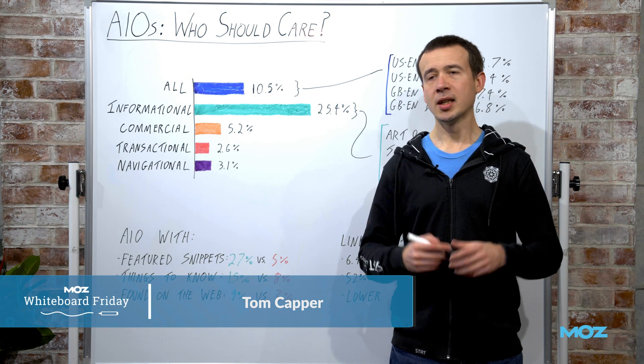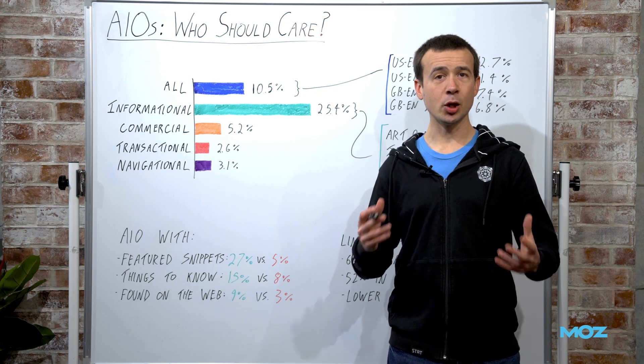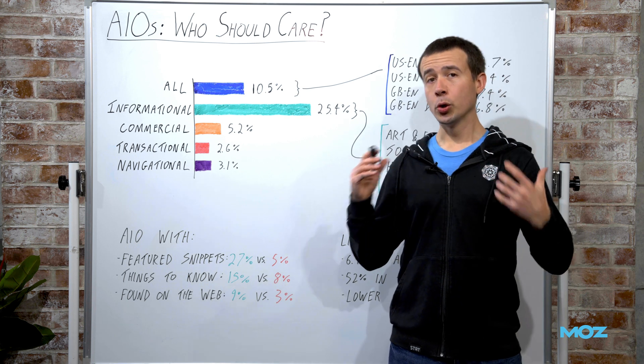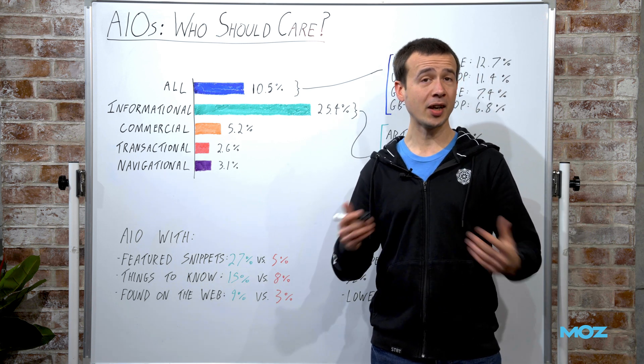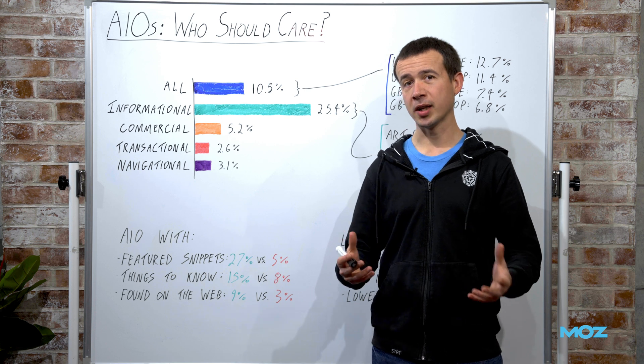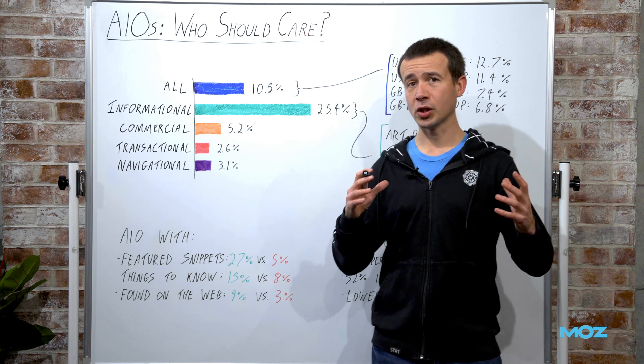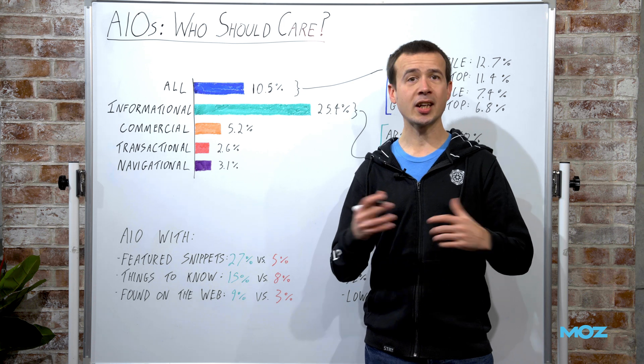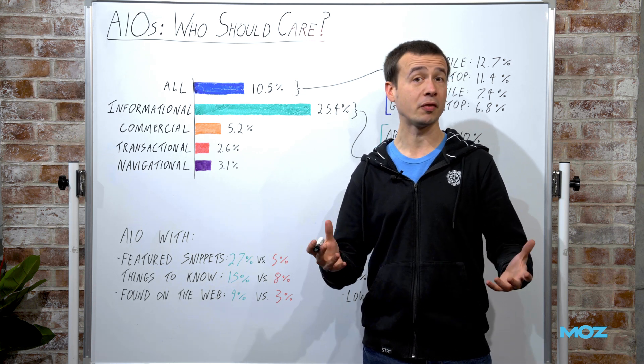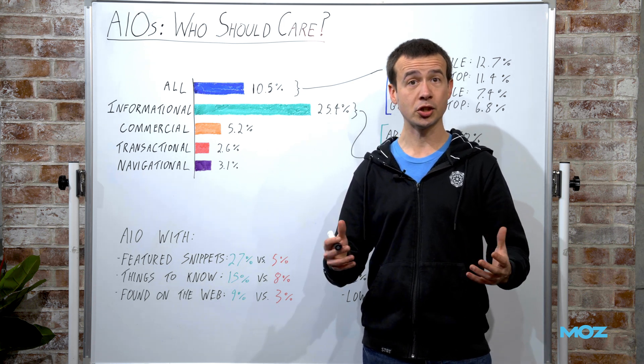Happy Friday, Moz fans. Today I want to talk about AI overviews and specifically who should care about AI overviews. What kind of searches are they affecting? How much? Who's appearing in them?